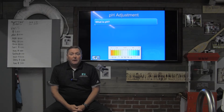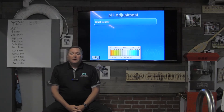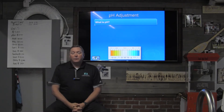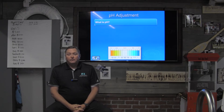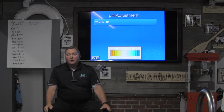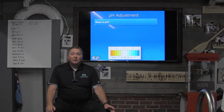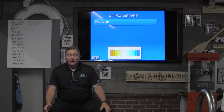Understanding pH as the most influential factor of the saturation index, let's talk about the relationship between pH and total alkalinity. We like to keep our total alkalinity within a certain range in the water — generally 80 parts per million to 120 parts per million, with 100 being perfect.